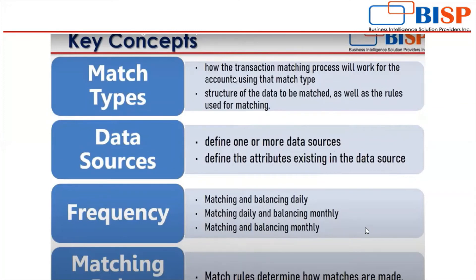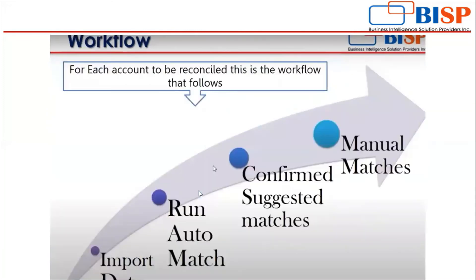This is the workflow for each account to be reconciled. First, we import the data into both data sources. Then the auto match is run, and thousands of transactions will automatically get matched according to the rules defined in the match type. The preparer is then left with only a few transactions to match manually or to confirm the suggested matches.